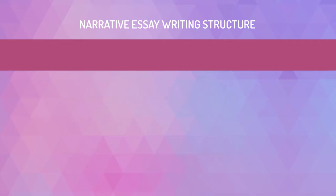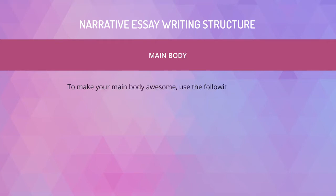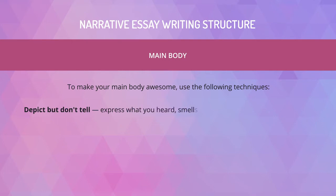After you've hooked your reader's attention, it's time to move on to the main part of your story. To make it awesome, use the following techniques. Depict, but don't tell. Good storytelling is expressive — it is rich with precise descriptions and sensory details that help the audience to visualize the events illustrated by the author. Express what you heard, smelled, touched, felt, and saw during the event.